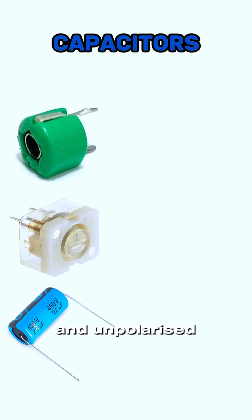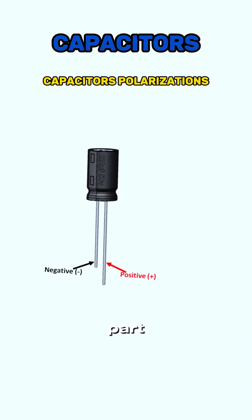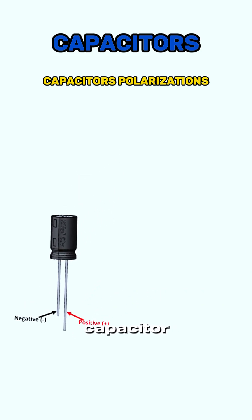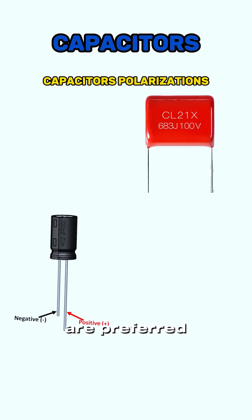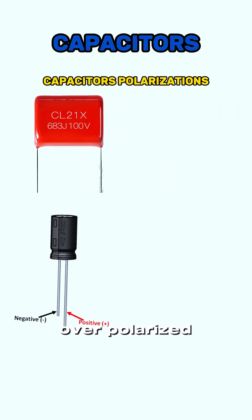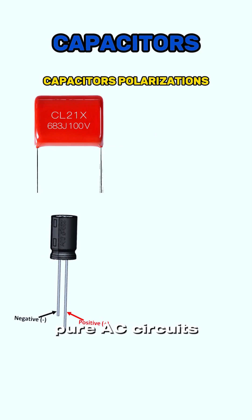The two polarization types are polarized and unpolarized. A polarized capacitor is an important electronic part, often called an electrolytic capacitor. Engineers use these capacitors to achieve high capacitive density. Unpolarized capacitors are preferred over polarized ones — they don't get destroyed by reverse voltage, so you can use them in pure AC circuits.